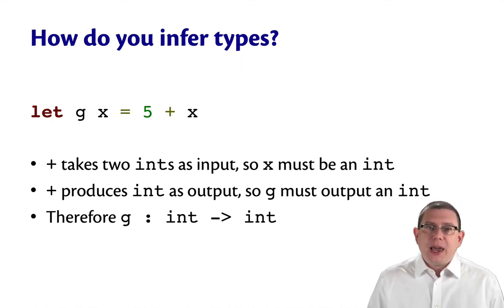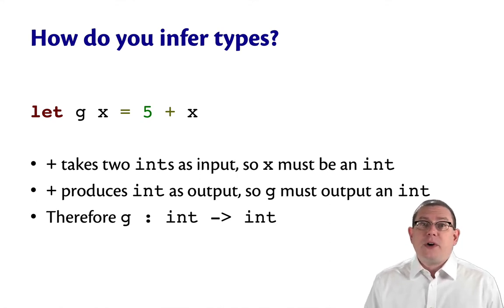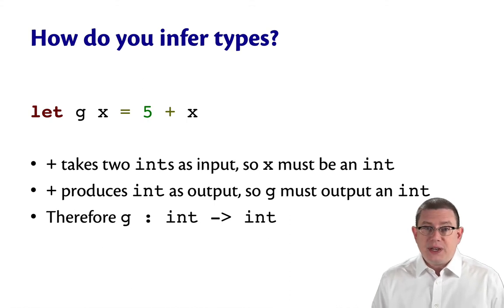Now, what about the type of the entire expression, 5 plus x? Well as I look at that, I know that the plus operation is guaranteed to produce an int as output. So now I know a constraint, a fact, about the expression on the right-hand side of equals. This function g must output an int. Well now I know both the input and output types of the function. Because I've inferred that x must be an int. And I've inferred that 5 plus x must be an int. So g, therefore, must be a function that takes an int and returns an int.